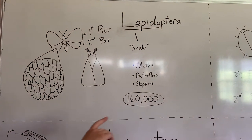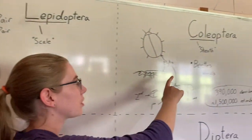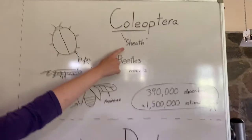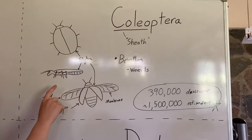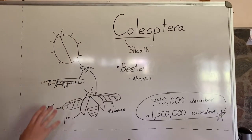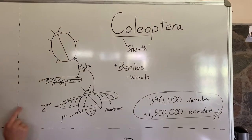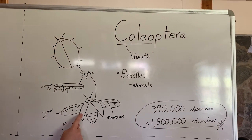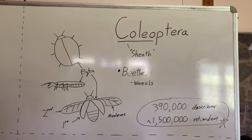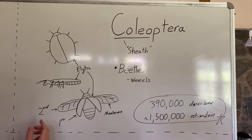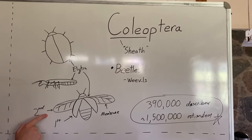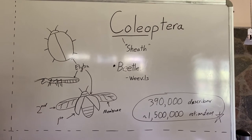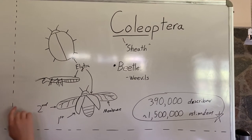The next order is Coleoptera — these are the beetles. Coleo means sheath, and that's describing the really hard shell that is the first wing, called the elytra, which is often very strong due to its intricate shape. The second pair of wings is very membranous — that's the translucent wing where you can see veins in it.